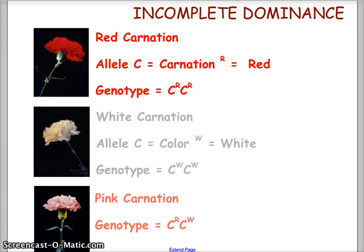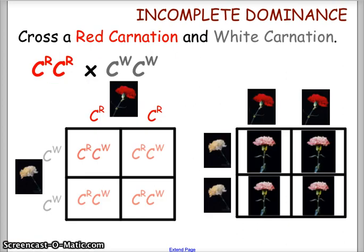Another example of incomplete dominance is carnations. Carnations can be red, white, or pink. The red carnation is the dominant trait — we use capital C for carnation with superscript R for red, giving genotype CR CR for red. For white carnations, we use superscript W, giving genotype CW CW. A pink carnation would have the genotype CR CW.